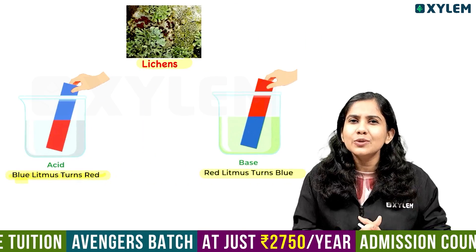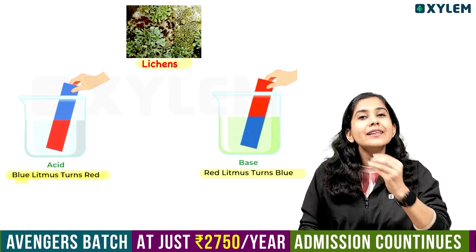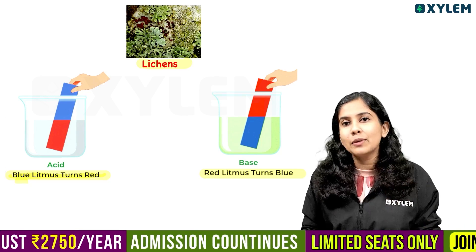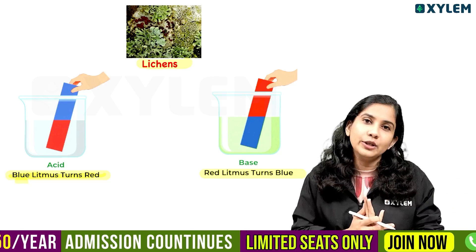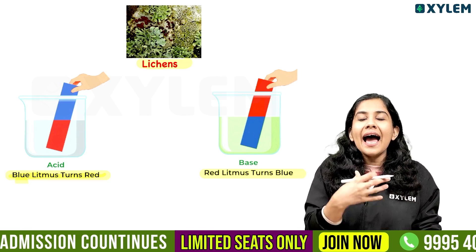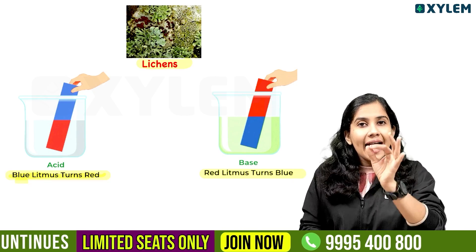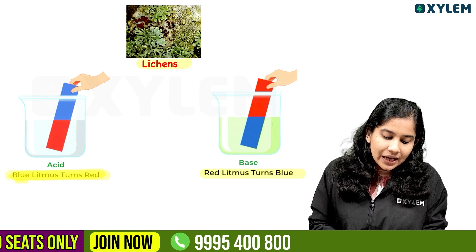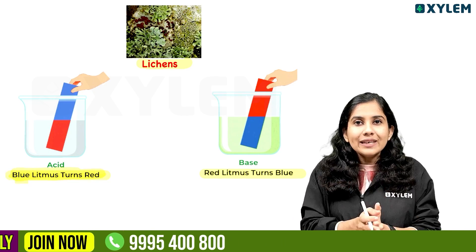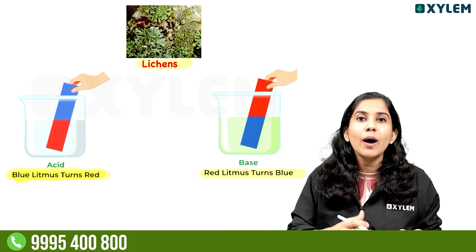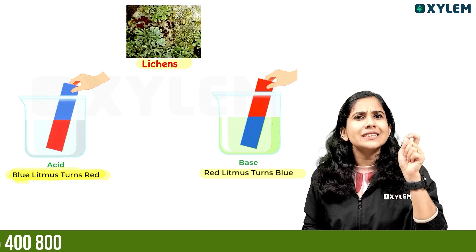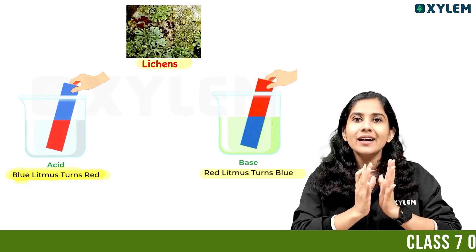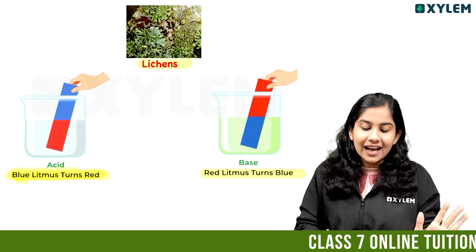Litmus comes in two colors: blue and red. If we dip the blue litmus paper in acid, it turns red. If we dip the red litmus paper in acid, the color will also change — it remains red in acid.